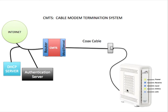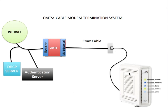The next step is for the modem to get an IP address from the DHCP server. Since the modem doesn't yet have an IP address, it sends a request to the CMTS, which relays it to the DHCP server. The DHCP server then checks the modem's registration information within the authentication server — this is the MAC address you registered when you called the ISP. Once that information is validated, the DHCP server sends a public IP address to the modem.